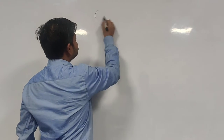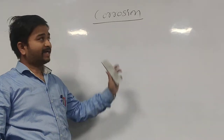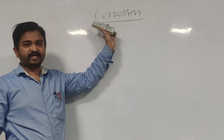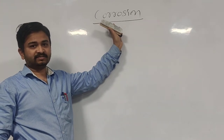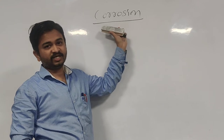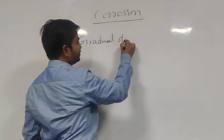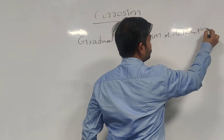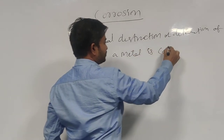Good morning everyone. Today's topic is corrosion. What is corrosion? As per general knowledge, corrosion means rusting of a metal — if any metal gets rusted, that is called corrosion. But as per the textbook definition, corrosion means gradual destruction or deterioration of a metal.